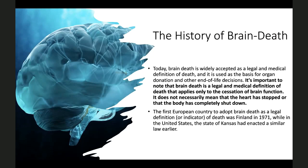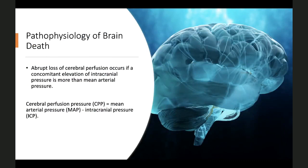Today, brain death is widely accepted universally. It is important to note that brain death is a legal and medical definition that only applies to cessation of brain function — the heart does not have to be stopped. The first European country to adopt brain death as a legal definition was Finland in 1971, while in the United States, Kansas had enacted a similar law earlier. The pathophysiology of brain death is basically the abrupt loss of cerebral perfusion when intracranial pressure exceeds mean arterial pressure — CPP = MAP − ICP. It can result from extracranial or intracranial lesions; hemorrhage, traumatic brain injury, and falls are major causes in the US.